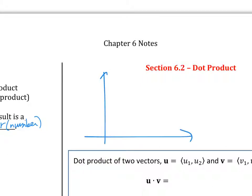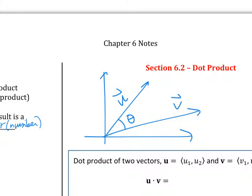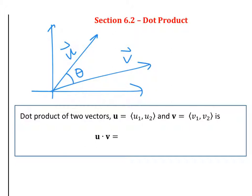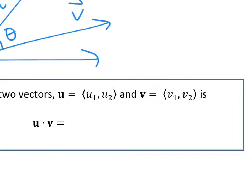Dot product is between two vectors. Let's say you have vector u and vector v — so now we have two vectors, with some angle in between them. When you see u with a dot and then v, you don't say 'u times v' — you say 'u dot v.' In the vector world, there are two ways to multiply two vectors together, so you have to be very specific. This is the dot product.